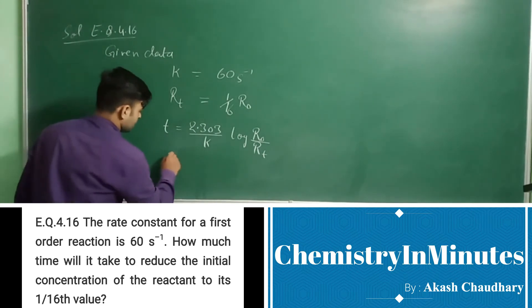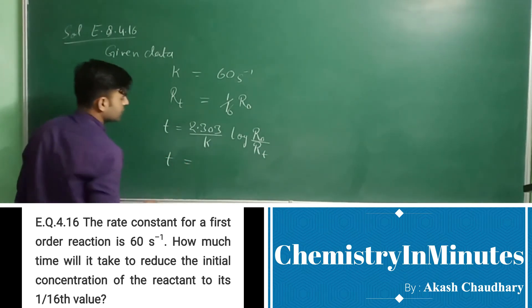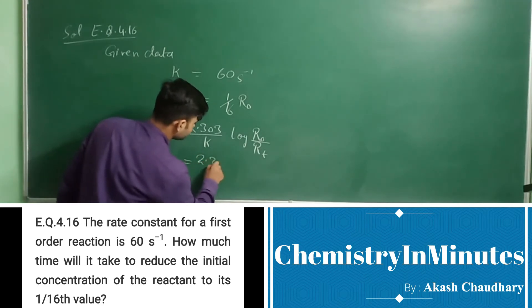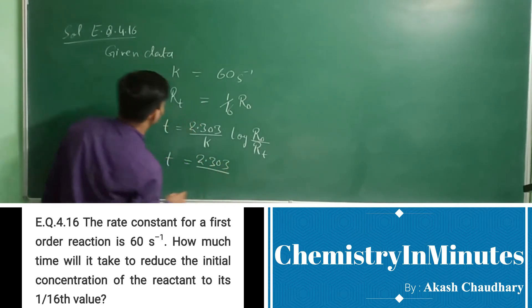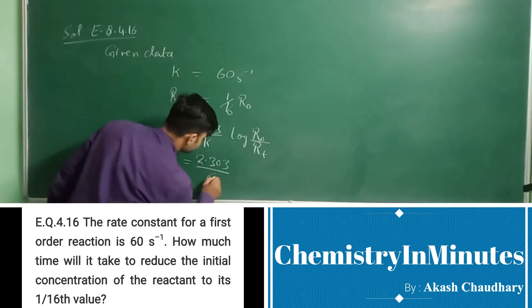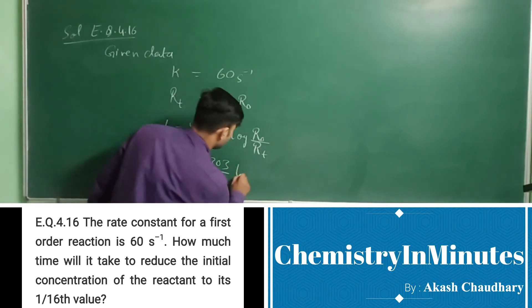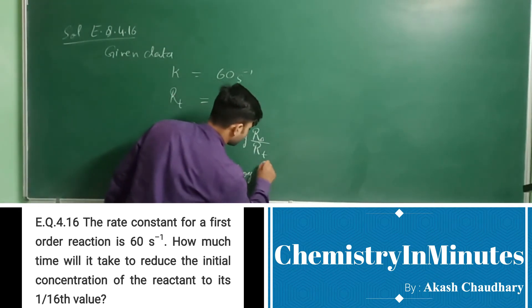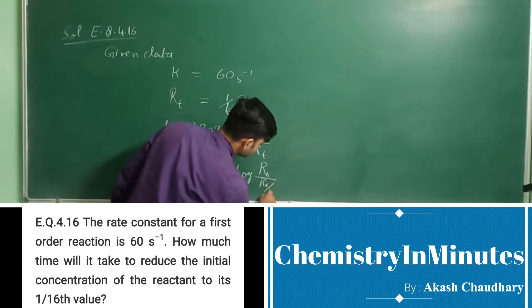Let's put the values: t equals 2.303 upon k which is 60 here, log r0 upon r0 divided by 16.